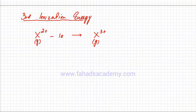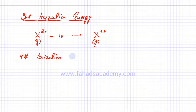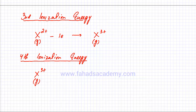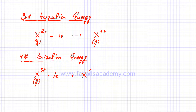The fourth ionization energy is the energy required to remove the fourth electron from an atom in which three electrons have already been removed — that is, removing one mole of electrons from one mole of gaseous three-plus ions to produce a gaseous four-plus ion. Ionization energies continue until no electrons remain in the atom.